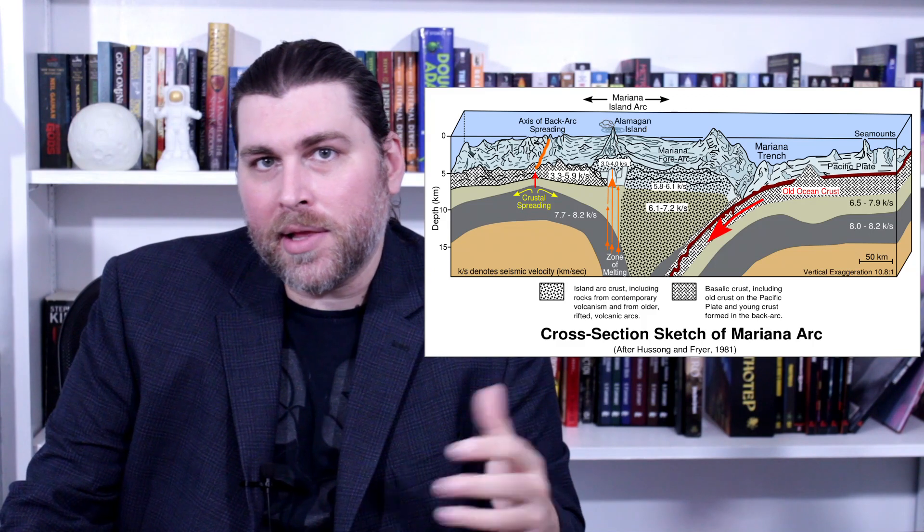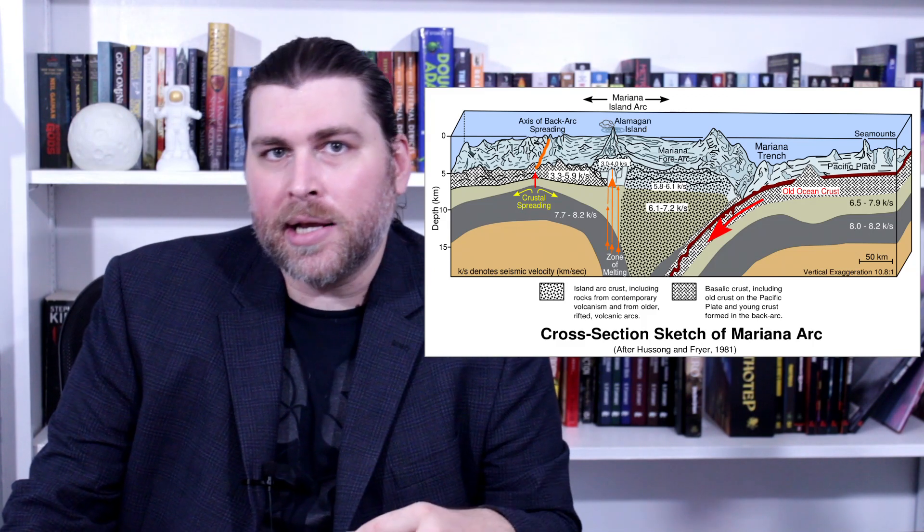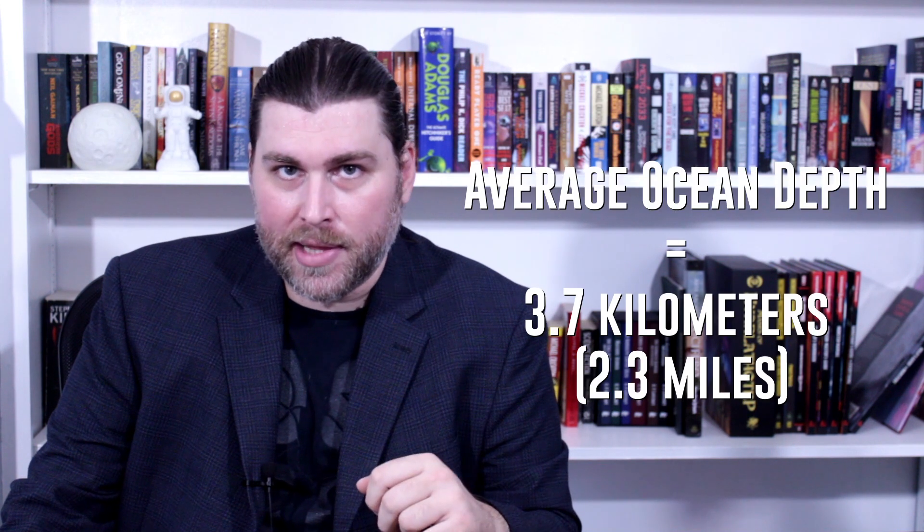Comet Bernardinelli-Bernstein is absolutely huge. Even at the lowest estimate, 40 kilometers wide, it's my speculation—yes, thank you computer—that it would be absolutely devastating to the Earth. The maximum depth of the Earth's ocean is around 11.02 kilometers, 6.84 miles. But this object in particular is much, much larger than that.